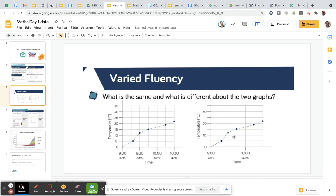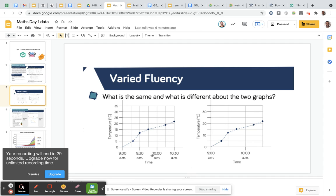So when it says what is the same and what is different about the two graphs, I would say they're probably showing similar pieces of information or exactly the same information, but it's the scale that's different.